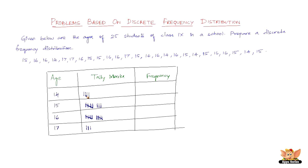Now counting the tally marks: the frequency of 14 is 4. The frequency of 15 is 5 plus 3, which is 8. The frequency of 16 is 5 plus 5, which is 10. The frequency of 17 is 3. We also need a total row, which confirms our construction — the total number of students in the question is 25, and when you add the frequencies you get 25, confirming that what we've done is correct. This is how we construct a discrete frequency distribution.